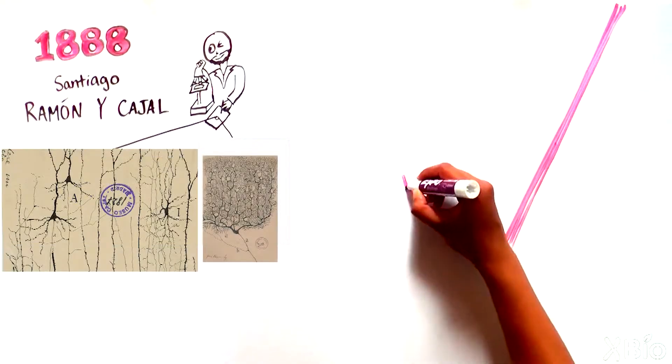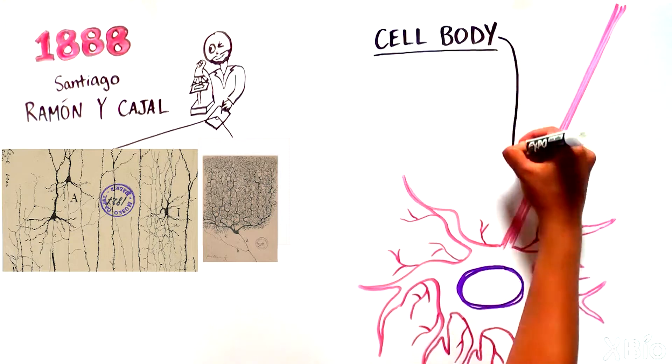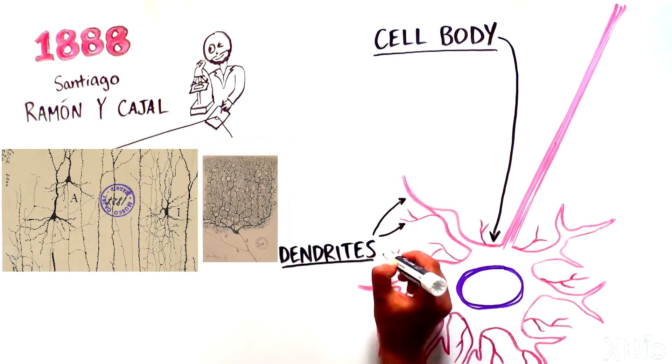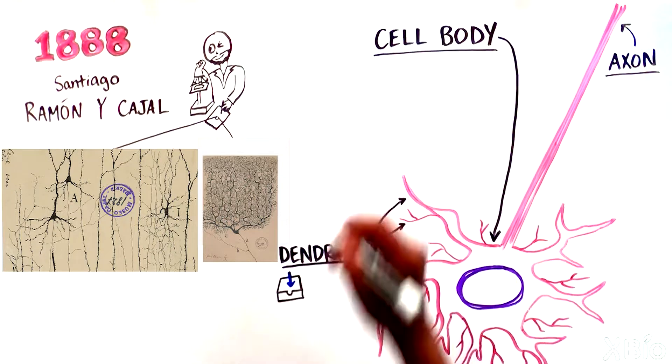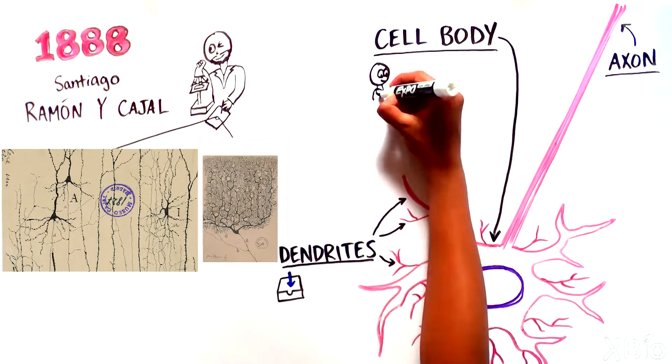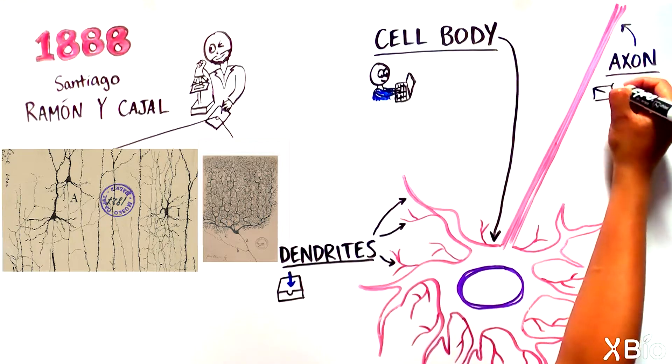These pictures led to the classification and naming of the three main parts of the neuron: the cell body, the dendrites, and the axon. You can think of the dendrites as the inbox of the neuron, the cell body as the person reading the email and formulating a response, and the axon as the outbox.